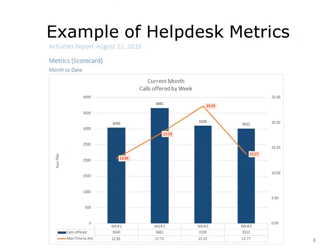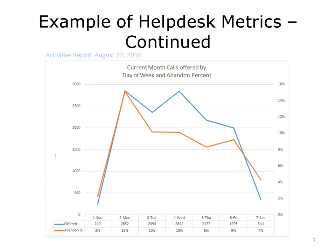This chart shows the volume of calls handled and the maximum time customers waited for their call to be answered. Wait time increased during the third week of the month despite a lower call volume than the previous week, suggesting further investigation may be needed. A line graph also shows call volume by day of week and the percentage of calls abandoned by customers — that is, the customer hung up before a technician answered. The highest call volume and the highest number of abandoned calls both occurred on Monday.